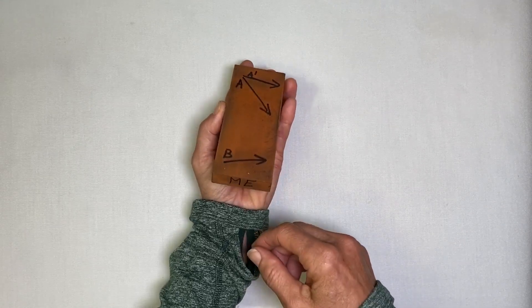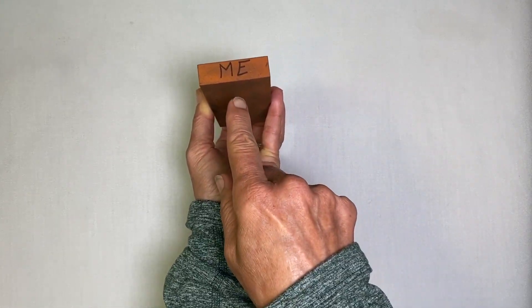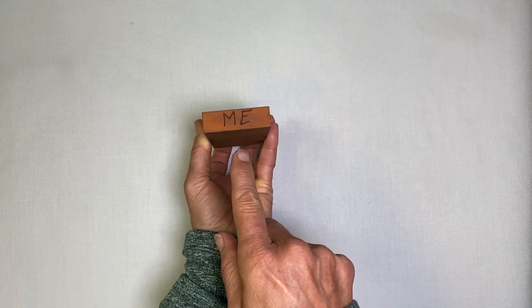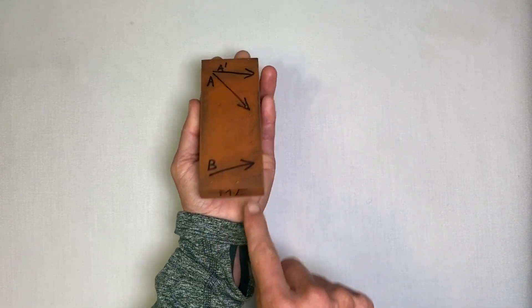Also, you need to indicate which part of the stone comes toward you. So I write the word 'me' and make sure I point that toward me.